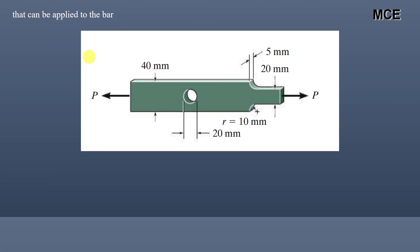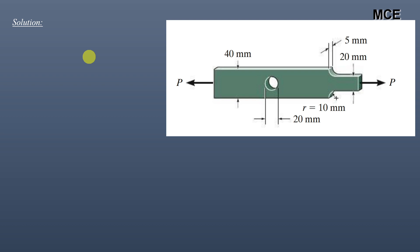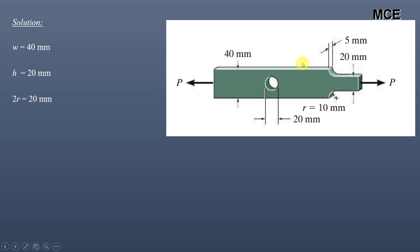Before solving the problem, let us define some terms. The width of the bar before the fillet is 40 mm. The width of the bar after the fillet is 20 mm. The diameter of the hole is 20 mm. The thickness of the bar is 5 mm, and the radius of the fillet portion is 10 mm.